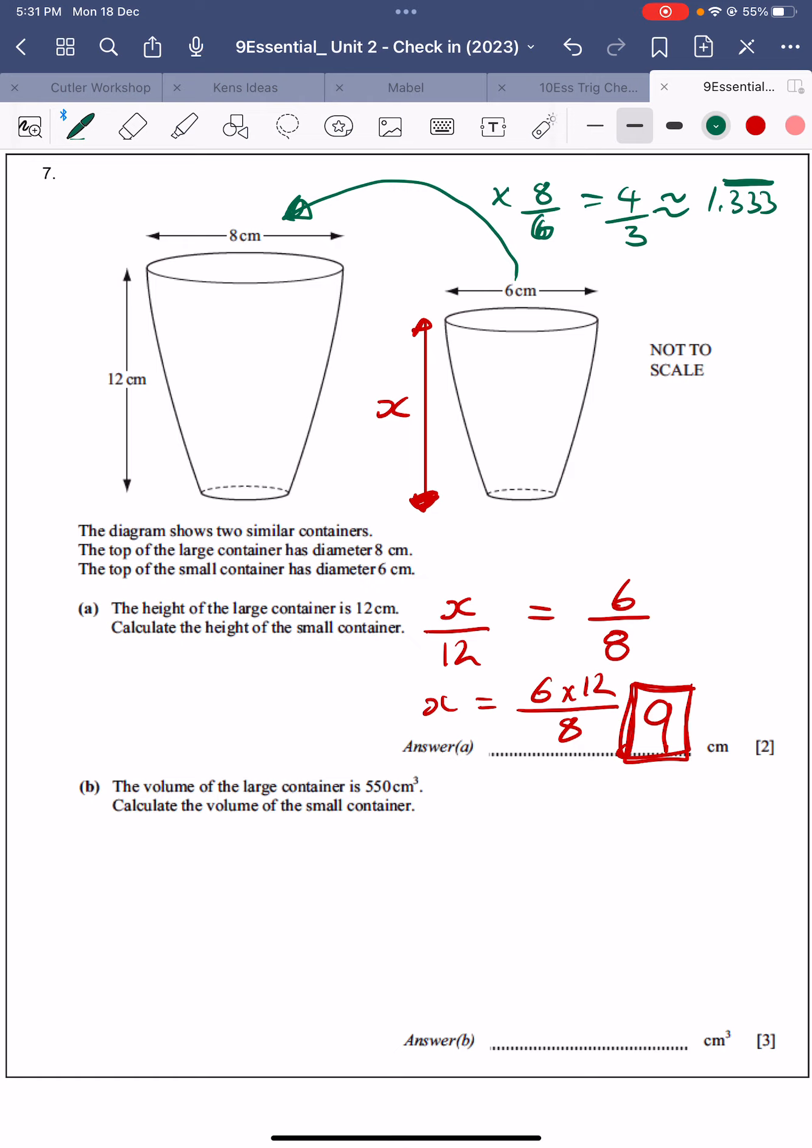And then you could go from 12, and you could divide by the 1.333 recurring. So that's a valid method. The volume of the large container is 550 centimetres cubed. So I'm going to put that on now. This is 550.